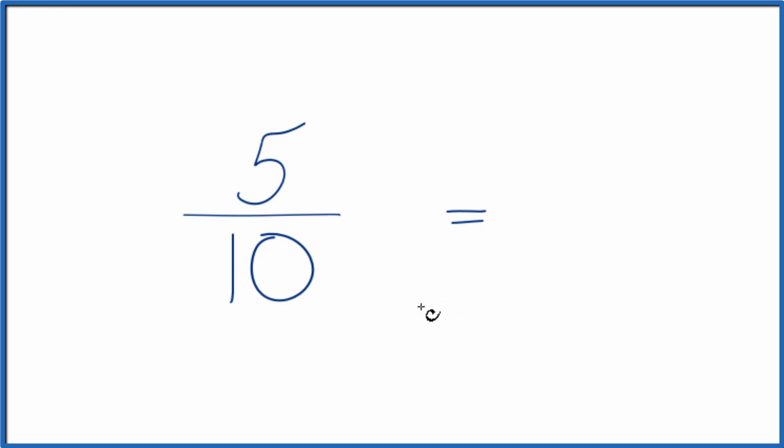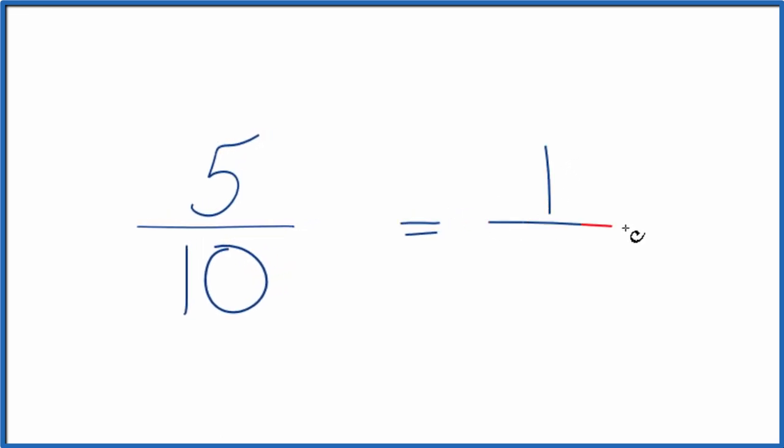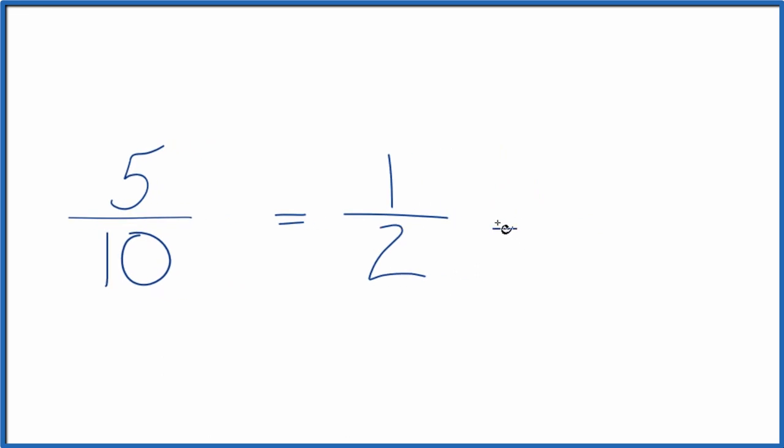To do that, for this one, let's first simplify it. 5 divided by 5 is 1, and 10 divided by 5 is 2. So 1 half is an equivalent fraction for 5 tenths. If you divide 5 by 10 or 1 by 2, you get 0.5. It's the same thing because they're equivalent.